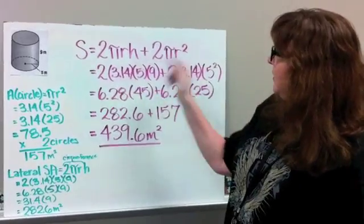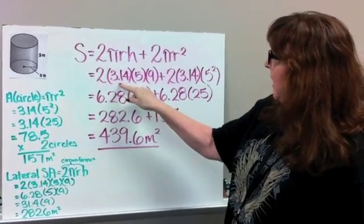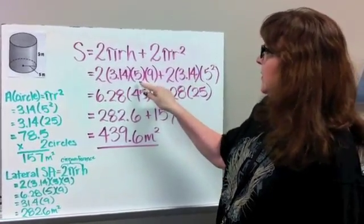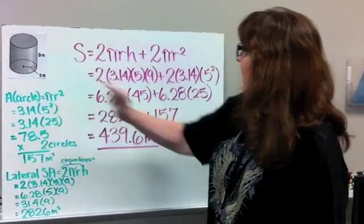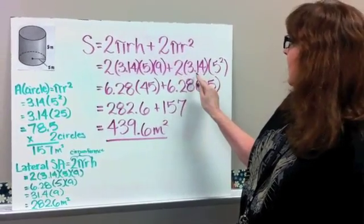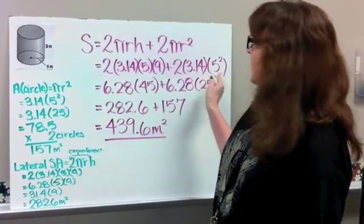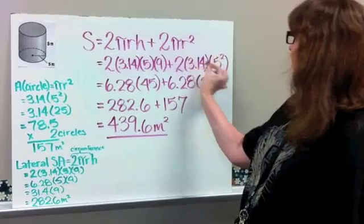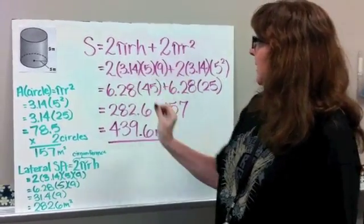So go ahead and you can see that you've got 2 times pi, 3.14, times your radius, which is 5, times your height, which is 9, plus 2 times 3.14, times 5 squared. That's your circles. These are your two circles, and that's your middle rectangle, basically.